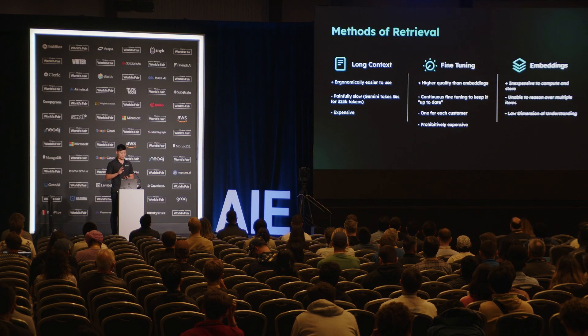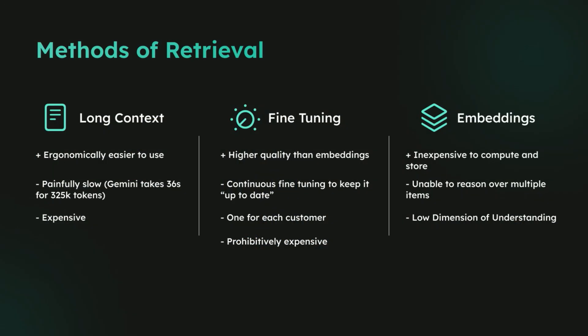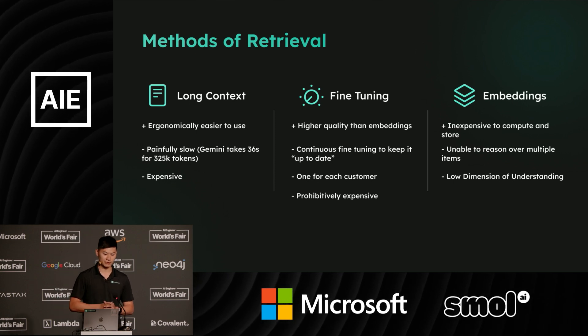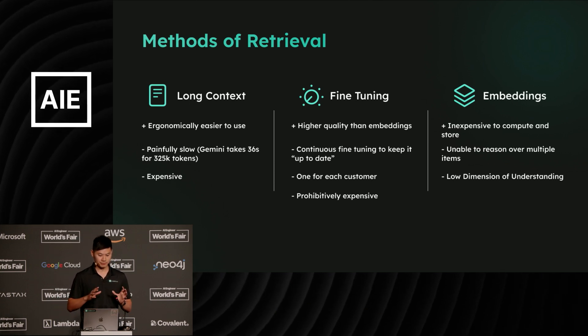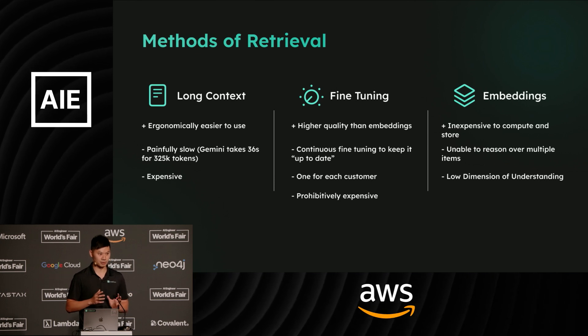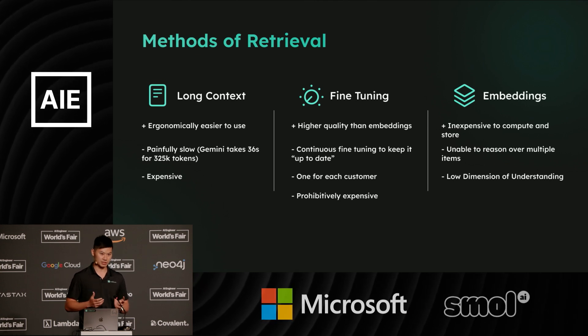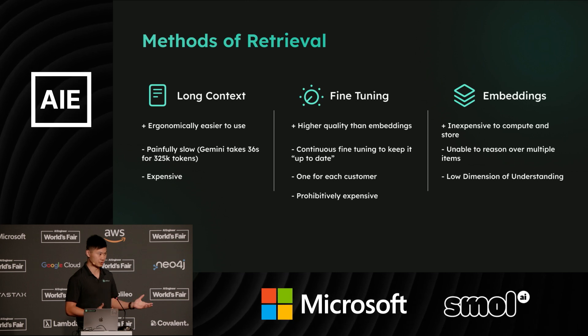There are really three main pillars people use to tackle this today. The first is long context — the idea that if you expand your prompt window in your LLM, it can read more input and be a bit more personal to what you're trying to generate. This is ergonomically easy — you just shove more items into your prompt — but it comes at the cost of latency and financial cost. Gemini, for example, takes 36 seconds to ingest 325k tokens. A moderately small repo is easily over 1 million tokens, about 100k lines of code. Most enterprises have over a billion tokens of code, so it's simply not feasible to throw everything into a long context model.